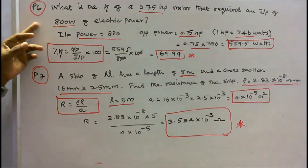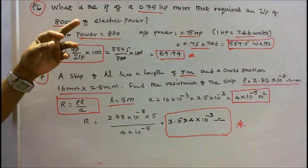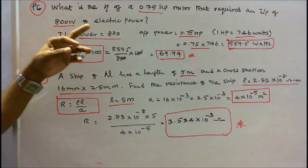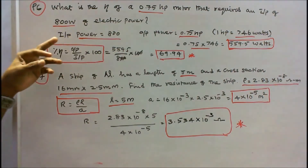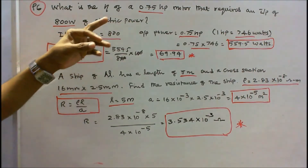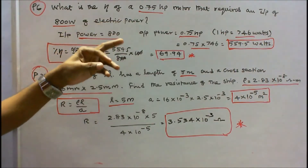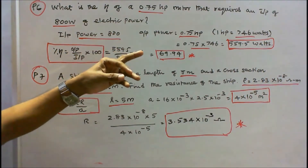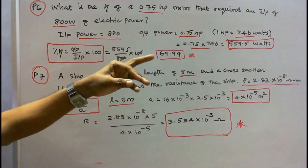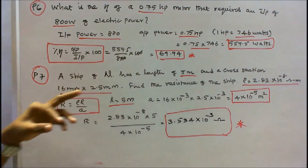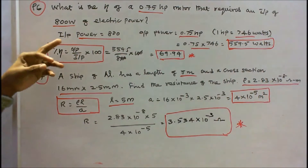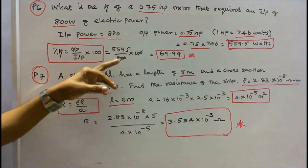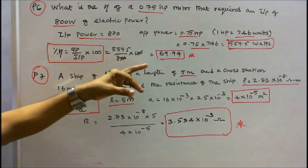Problem 6: What is the efficiency of a 0.75 horsepower motor that requires an input of 800 watts of electric power? Input power = 800 W. Output power = 0.75 × 746 = 559.5 watts. Percentage efficiency = (output/input) × 100 = (559.5/800) × 100 = 69.94%.